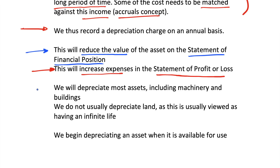We depreciate most of our non-current assets — long-term assets such as machines or buildings. Even though buildings can be around for hundreds of years, we still depreciate them. We may think of buildings as increasing in value over time, like houses, but that's often the land the building stands on that increases. The building itself — the walls and roof — will slowly wear out over time, so we need to depreciate it.